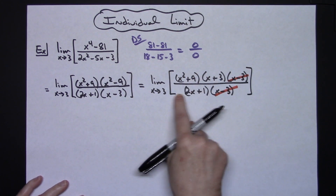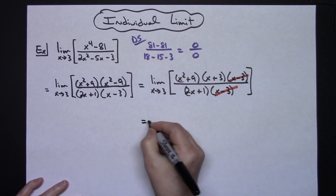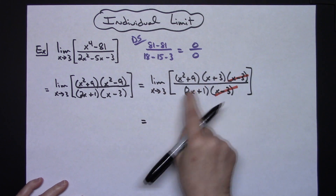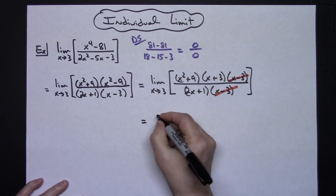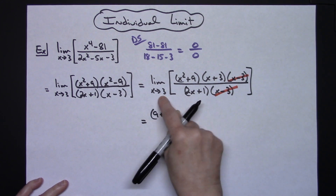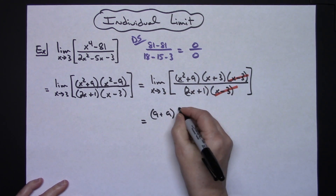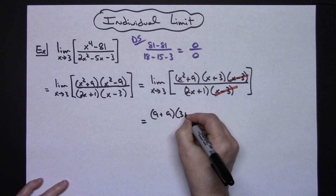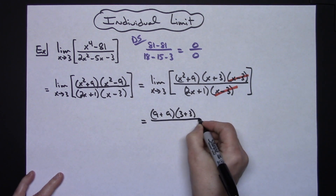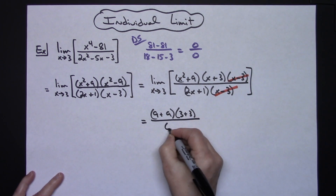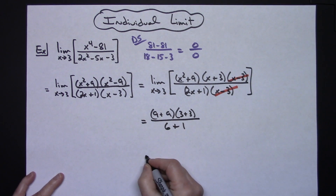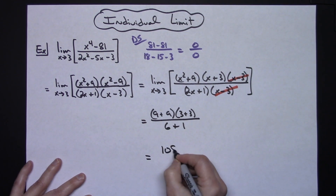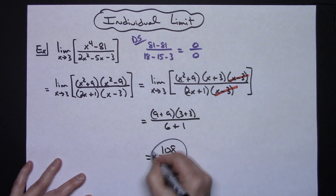Now I can do a direct substitution. I drop my limit notation. 3 squared gives 9 plus 9. Plugging in 3 gives 3 plus 3. Plugging in 3 in the denominator gives 6 plus 1. Doing the math, this gives me 108 over 7.